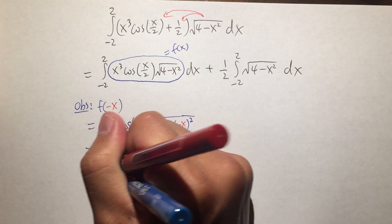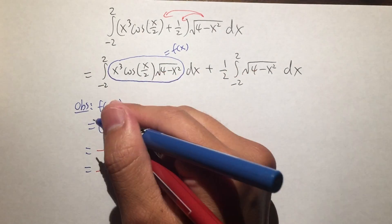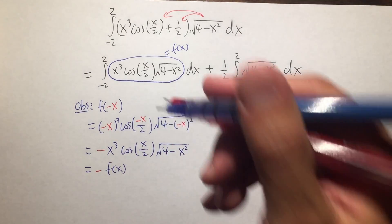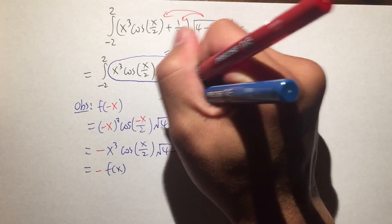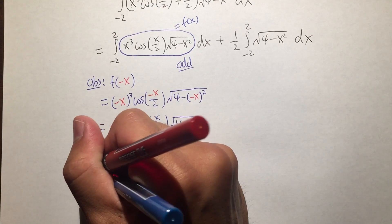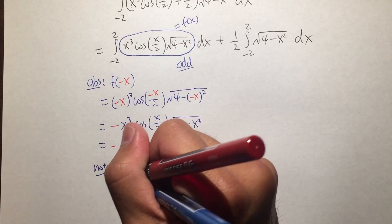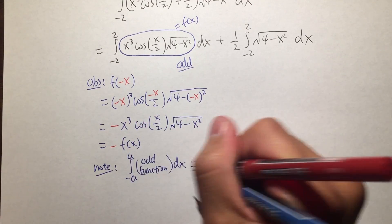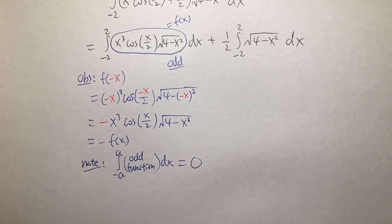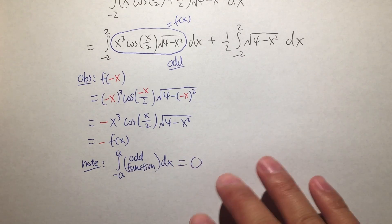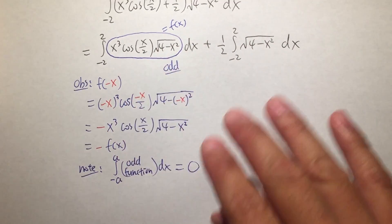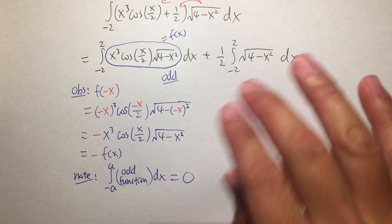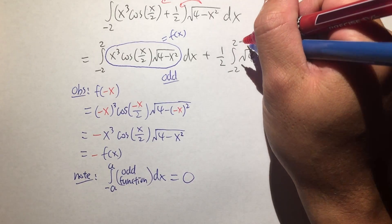So f of negative x equals negative f of x, which means this is an odd function. And the property is: whenever we integrate from negative a to a of an odd function, the result is equal to zero. That's one of the properties of a definite integral, and you don't have to do any crazy integration steps. So the whole first integral is just zero.